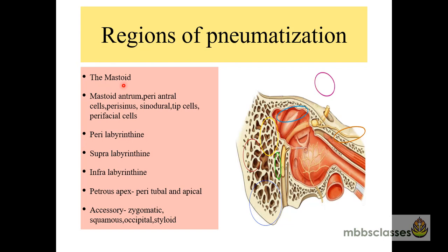What are the regions of pneumatization? Mastoid is the largest area of pneumatization of the temporal bone. Other accessory areas are the zygoma, squamous part, occipital, and styloid. Looking at the different areas of pneumatization of the mastoid: the mastoid antrum is the largest air cell, and around it are the periantral cells. The sigmoid sinus lies nearby, so this group of air cells is known as the perisinus cells.